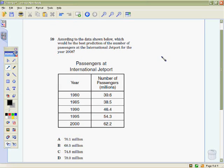Okay, according to the data shown below, which would be the best prediction of the number of passengers at the international jet port for the year 2008? So we've got, let's examine the data we're given. We have 1980, 1985, 1990, 1995, and 2000.